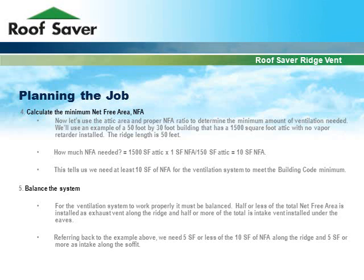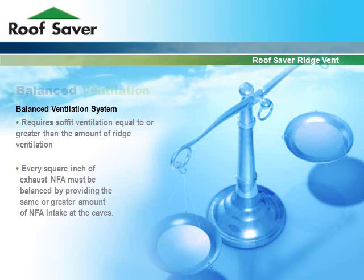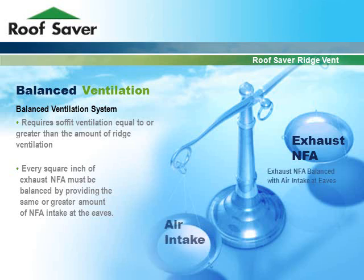For the ventilation system to work properly, it must be balanced. Half or less of the total net free area is installed as exhaust vent along the ridge, and half or more of the total is intake vent installed under the eaves. Referring back to the example, we need 5 square feet or less of the 10 square feet of NFA along the ridge and 5 square feet or more as intake along the soffit. A balanced ventilation system requires soffit ventilation equal to or greater than the amount of ridge ventilation — every square inch of exhaust net free area must be balanced by the same or greater amount of intake at the eaves.